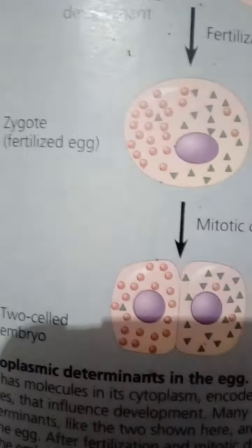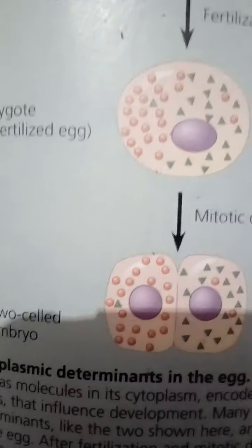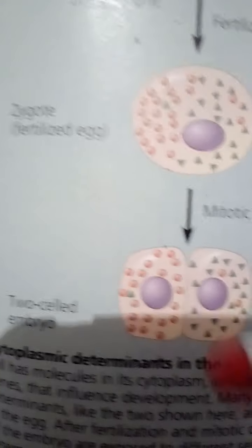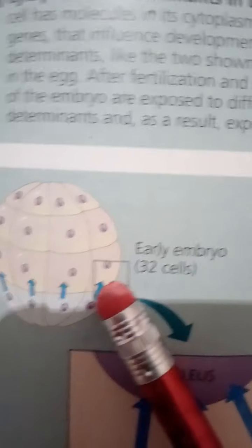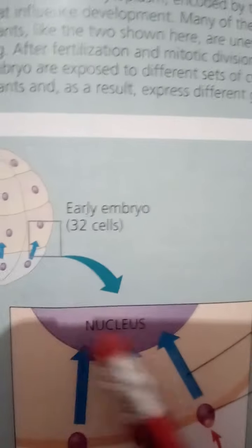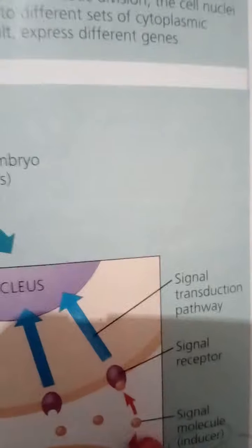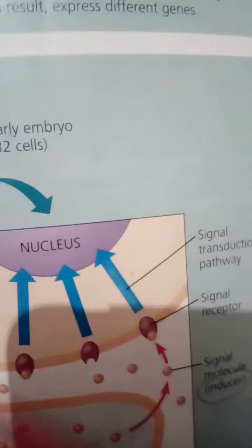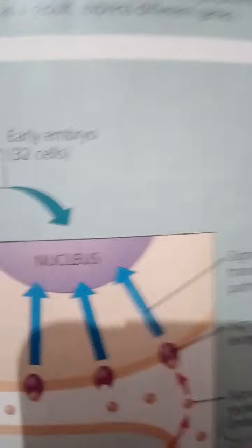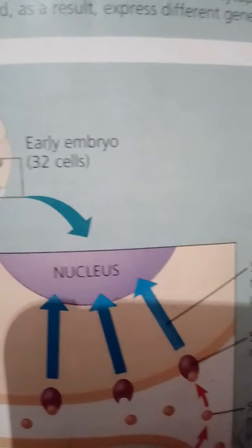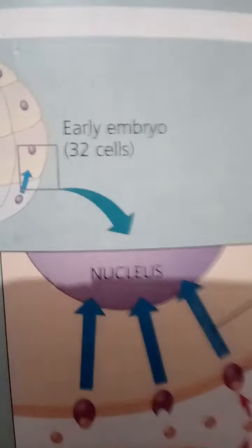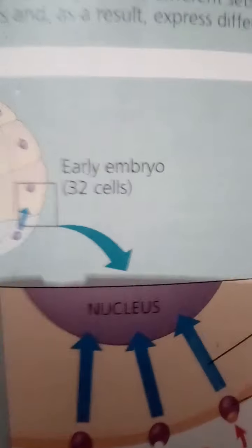After fertilization and mitotic division, the cell nuclei of the embryo are exposed to different sets of cytoplasmic determinants, and as a result express different genes. Notice two — the early embryo at 32 cells. This illustrates induction by nearby cells: the cells at the bottom of the early embryo depicted here are releasing chemicals that signal nearby cells to change their gene expression.